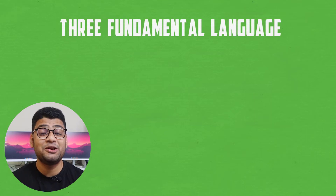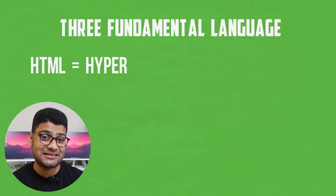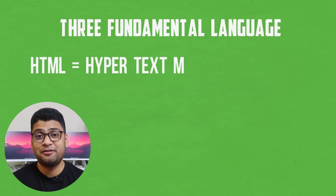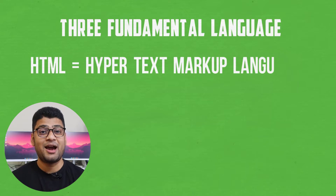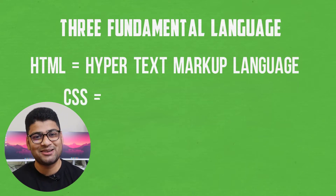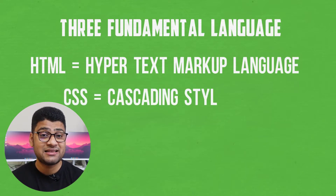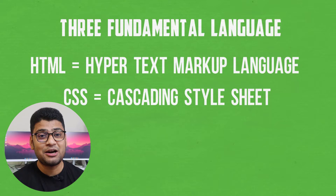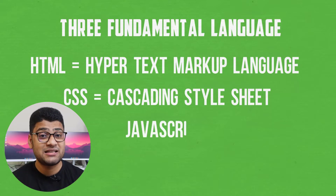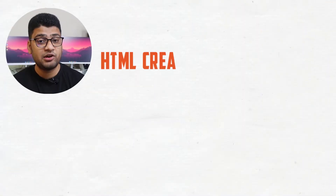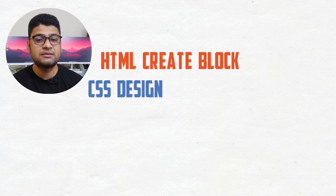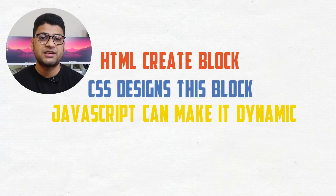Let's talk about the code. If you are interested to become a web developer, you must have three basic understandings. First is HTML — HyperText Markup Language. Second is CSS — Cascading Style Sheets. And third is JavaScript. HTML creates the block, CSS designs the block, and JavaScript makes it dynamic.